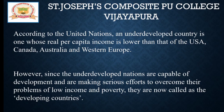Countries like the USA, Canada, Australia, and some Western European countries have good real national income, and so they are considered developed countries. Those countries whose real national income as well as per capita income is low are recognized as underdeveloped countries. However, since underdeveloped nations are capable of development and are making serious efforts to overcome problems of low income and poverty, they are now called developing countries.